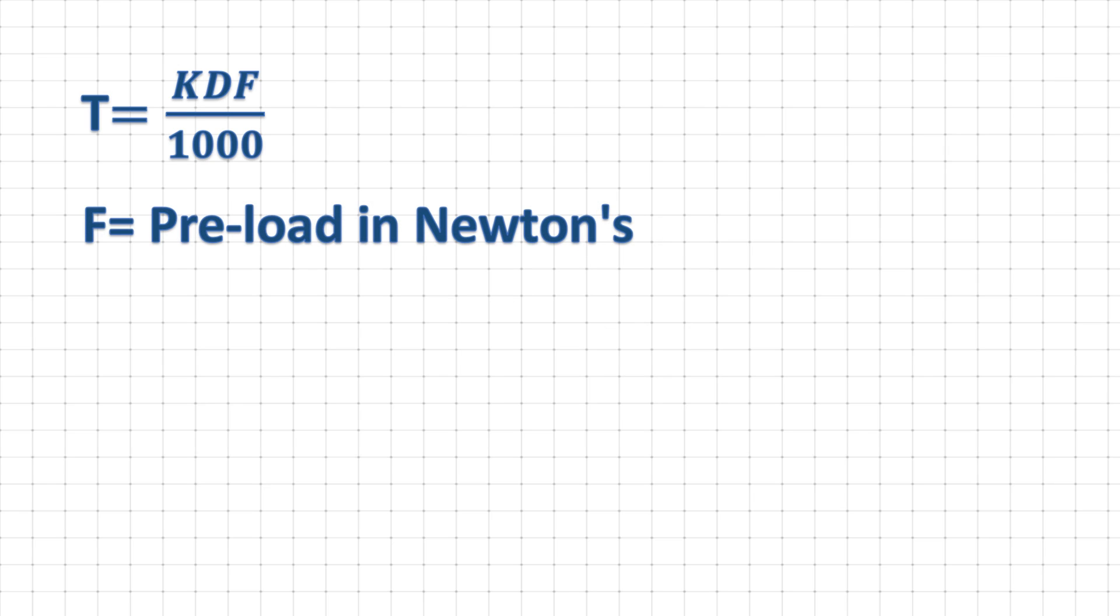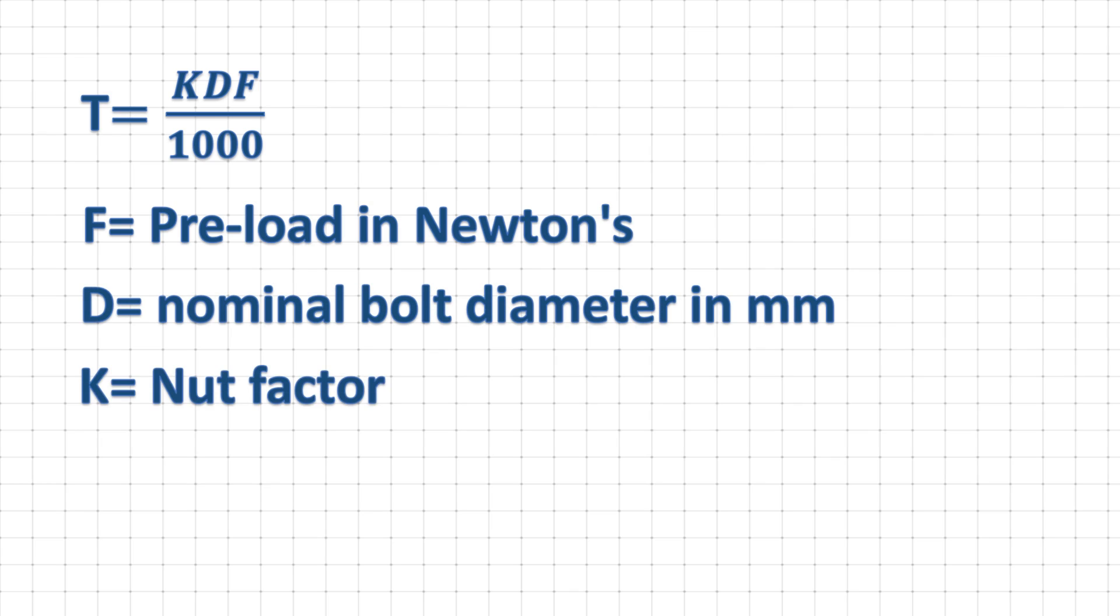Okay, so we can use this relation to calculate tightening torque. Here symbol F is required preload in Newtons, and D is the nominal diameter in mm, and K is the nut factor and it is a unitless number.